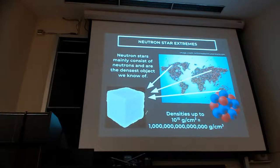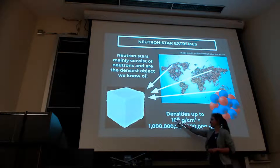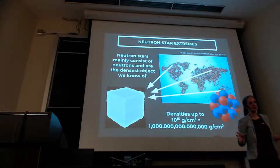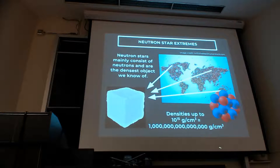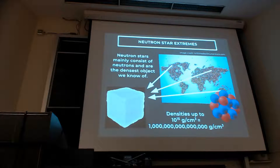If you do that, you end up with something like 10 to the 15 grams per cubic centimeter — that's a one with 15 zeros. These densities are so high that they actually exceed the densities of atomic nuclei that we have in every single atom on Earth. This is denser than everything we can create in experiments on Earth, and that is one of the fascinating aspects of these stars.